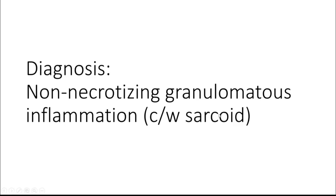This one we can term: non-necrotizing granulomatous inflammation consistent with sarcoid. We can also use the broader term 'granulomatous inflammation' because, depending on your geographic context, it can be very difficult to truly exclude an infectious process. If you live in an area with high tuberculosis prevalence, you may be even less inclined to use 'sarcoid' because it's hard to exclude TB even without necrosis. Sometimes I add 'consistent with sarcoid' when the clinical picture is very clear. About 5% of sarcoid can involve the CNS without manifestations of pulmonary or extra-cranial disease.